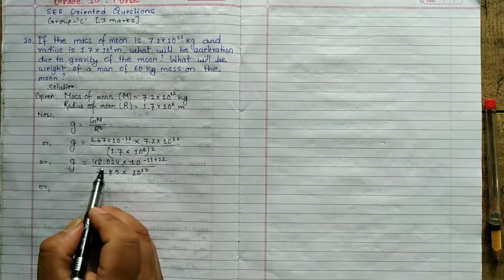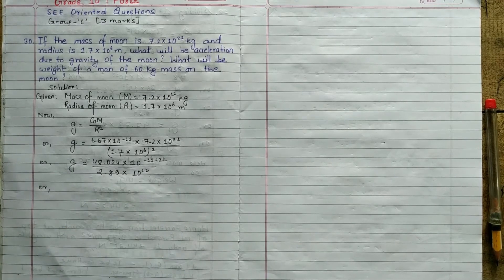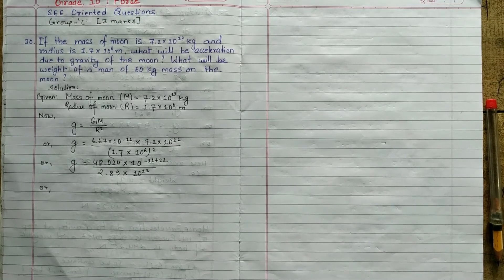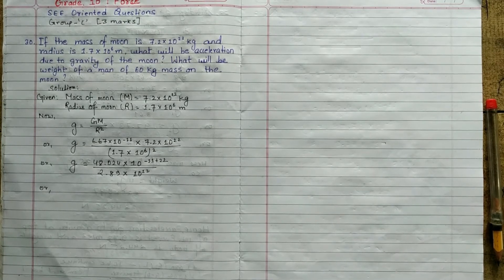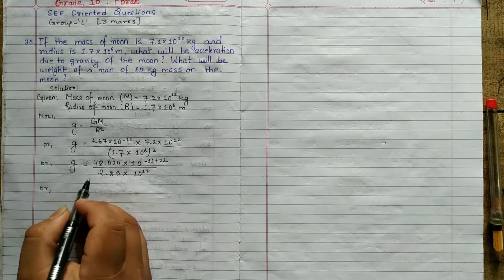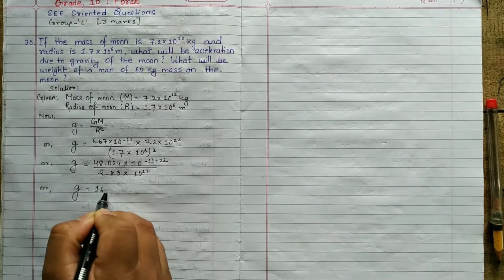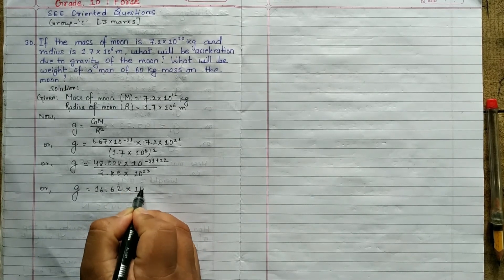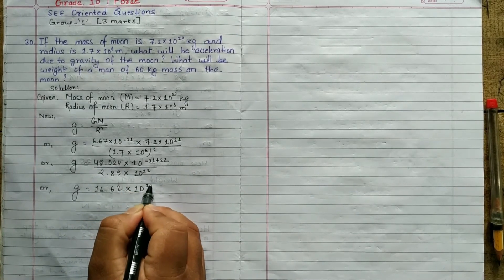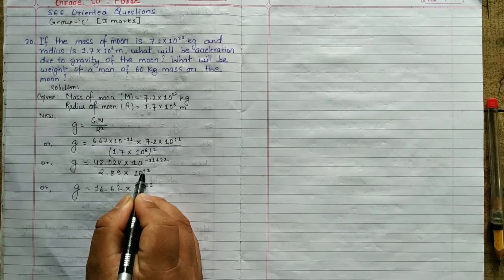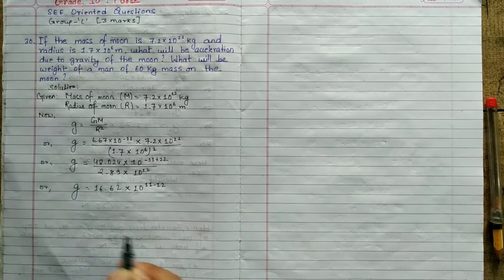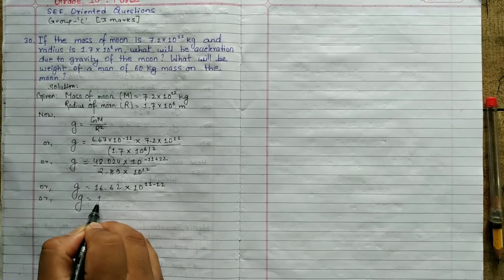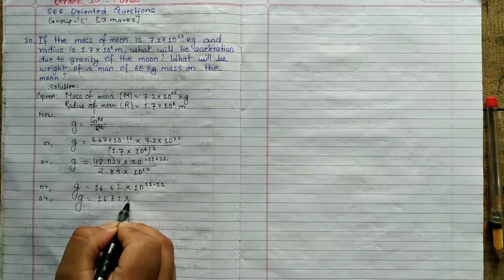Now, 48.024 divided by 2.89. So that answer, g equals to 16.62 into 10 to the power -11 plus 22, -11 plus 22 is 11, 10 to the power 12 minus 12.